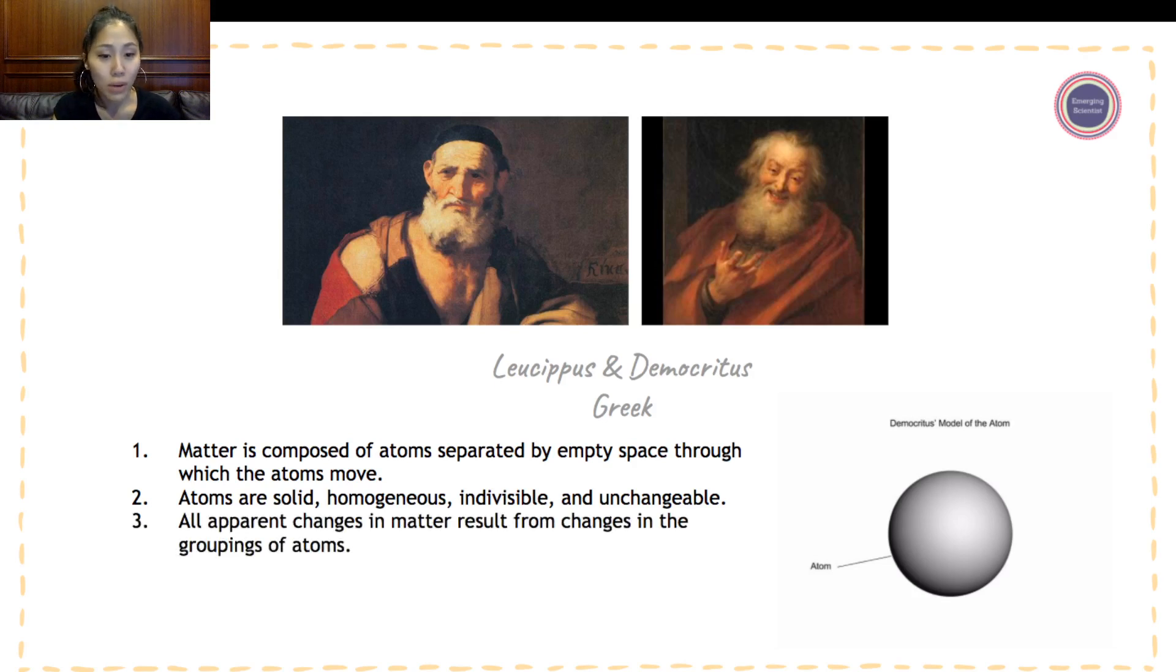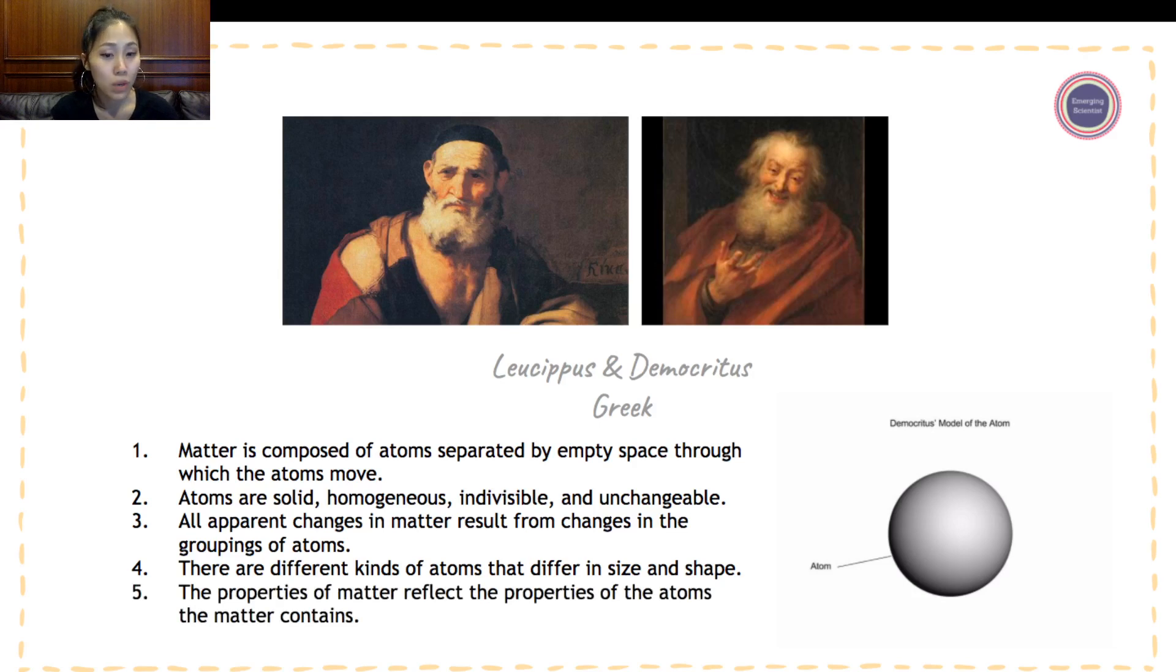Third, all apparent changes in matter result from changes in the grouping of these atoms. Four, there are different kinds of atoms that differ in size and shape. Five, the properties of matter reflect the properties of the atoms the matter contains. So at this point in time in 400 BC, you can see that majority of these theories really are looking at defining matter a little bit better. So they came up with the concept of atoms.